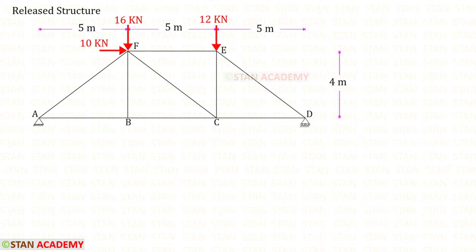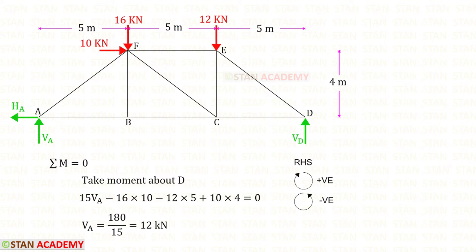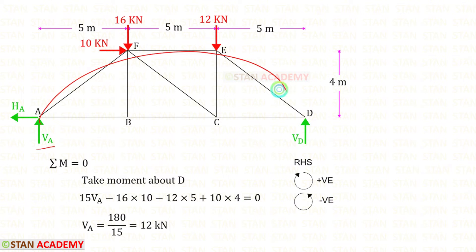Let us find all of the member forces in the released structure. Before finding the member forces, we have to find the reactions. At A, we need to find 2 reactions; at D, we need to find 1 reaction. To find VA, I am going to take moment about D. We follow the right-hand side rule: clockwise will be positive and anticlockwise will be negative. VA is acting in the clockwise direction, so it will be positive, and the distance is 5 plus 5 plus 5, so it will be 15. 15 VA.